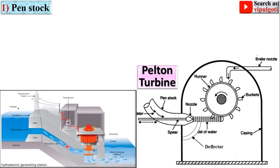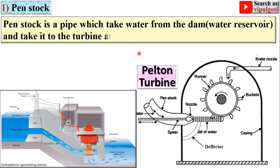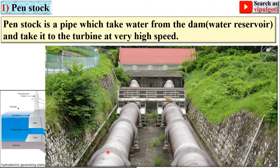Now let us start from the first part, the pen stock. This one is the pen stock in the hydropower plant. Pen stock is a pipe which takes water from the dam and delivers it to the turbine at very high speed.